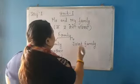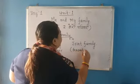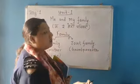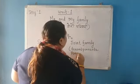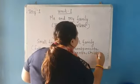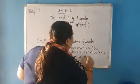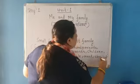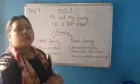Whereas in joint family, we have grandparents — that means your grandfather and grandmother — your parents, that is father and mother, children, uncle, aunt, and cousins. Yes, there are more number of people in joint family.